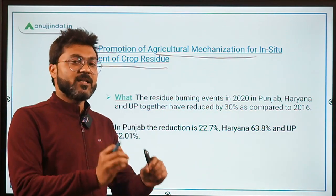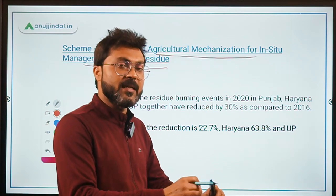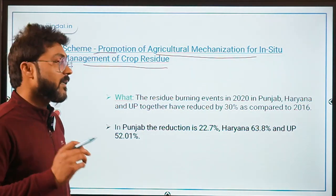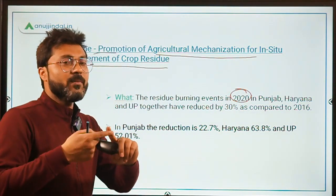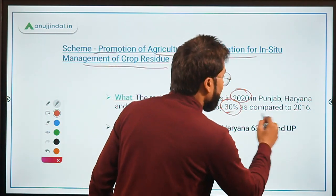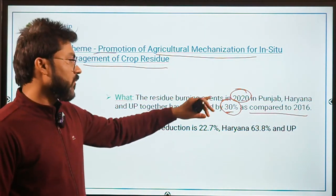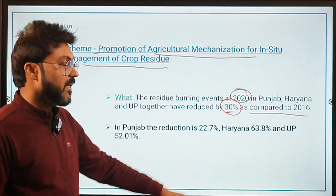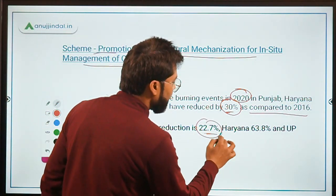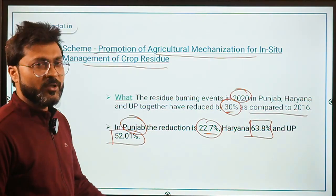This scheme was launched for the promotion of farm mechanization so that crop residue can be managed in-situ. The Ministry of Agriculture and Farmers Welfare stated that in 2020, crop residue burning events in Punjab, Haryana, and Uttar Pradesh together declined by 30% compared to 2016. Individual reductions were: Punjab 22.7%, Haryana 63.8%, and Uttar Pradesh 52.01%.